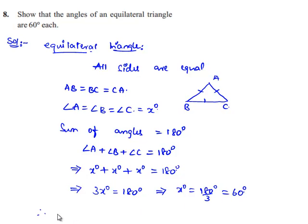Therefore, we get angle A is equal to angle B is equal to angle C is equal to 60 degrees. All three angles in the equilateral triangle equal 60 degrees, which is the required proof.